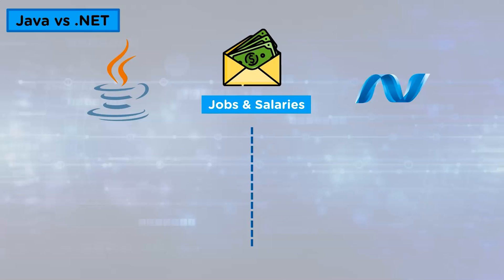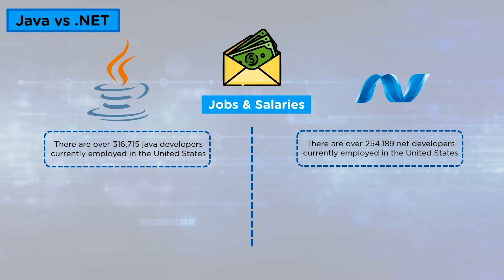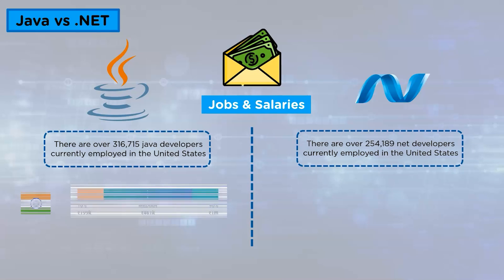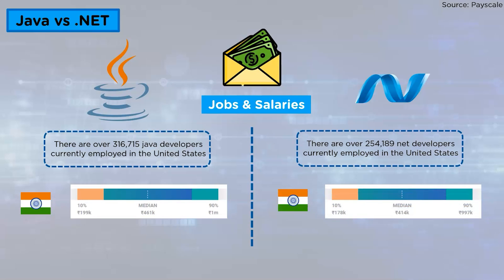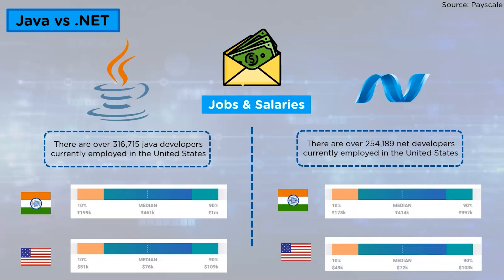Lastly, we will look at Jobs and Salaries. There are over 316,715 Java developers currently employed in the United States, whereas there are over 254,189 .NET developers currently employed in the United States. The average salary for a Java developer in India is $461,000, whereas the average salary for a .NET developer in India is $414,000, and the average salary for a .NET developer in the United States is $72,000.